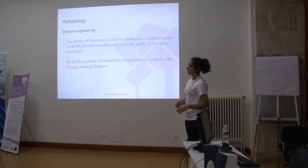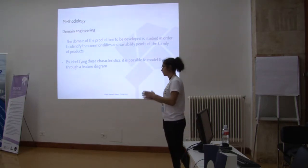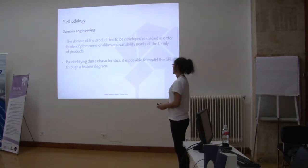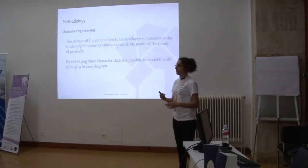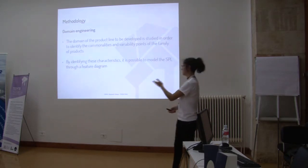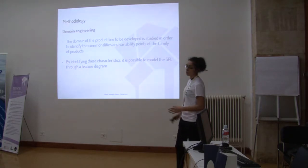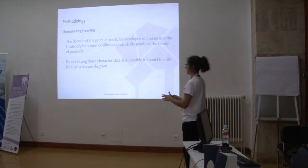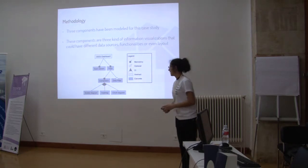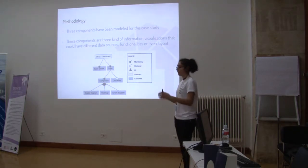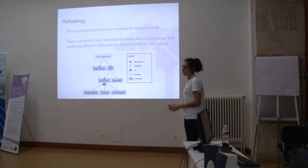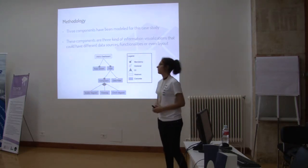The methodology we followed was within the SPL paradigm. The first step was to study the domain — in this case the dashboard domain — and to identify the commonalities and variability points among the different products that could be generated. By identifying these characteristics, it is possible to model the SPL through a feature diagram. A feature diagram is a hierarchical diagram that represents all the features and the variability points, the optional, mandatory, and alternative features of every product that could be part of the product line.